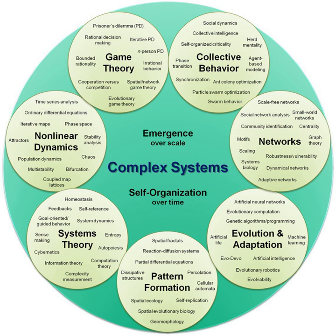Key concepts include: System — an organized entity made up of interrelated and interdependent parts. Boundaries — barriers that define a system and distinguish it from other systems in the environment. Homeostasis — the tendency of a system to be resilient towards external factors and maintain its key characteristics.